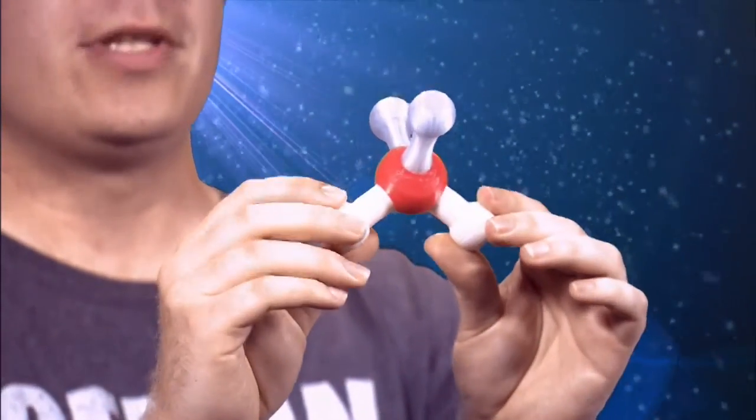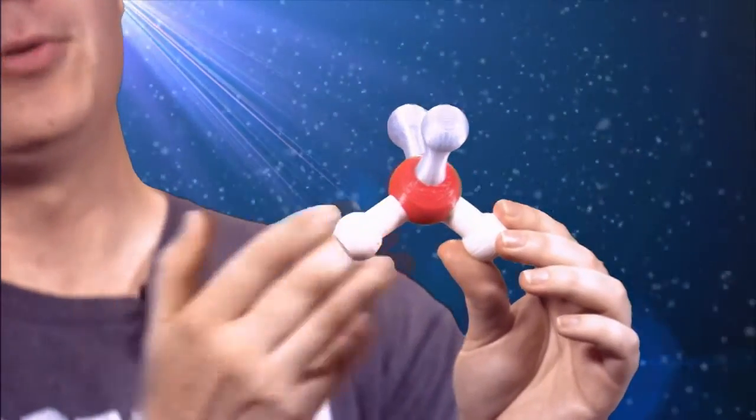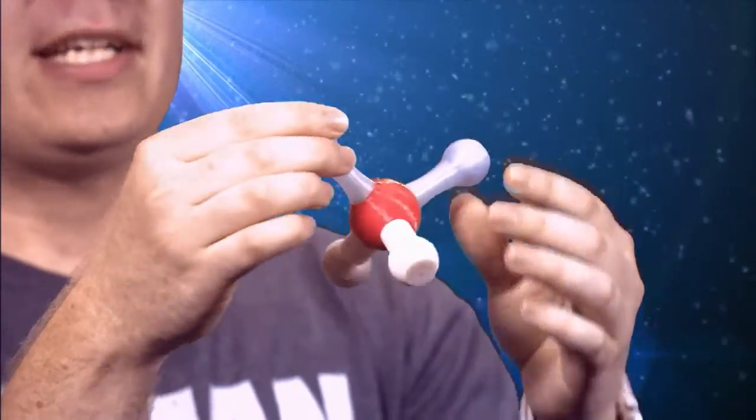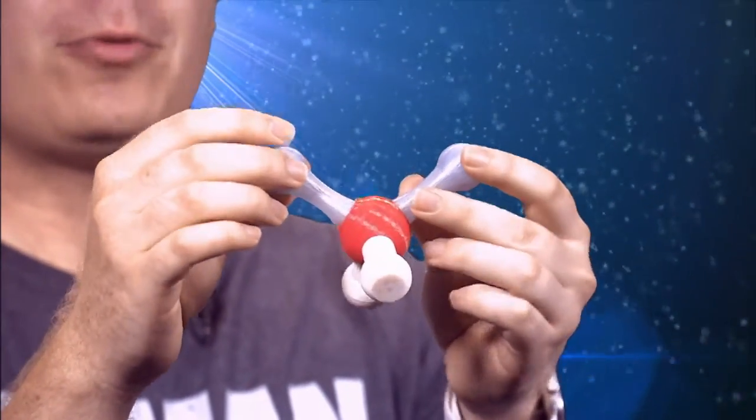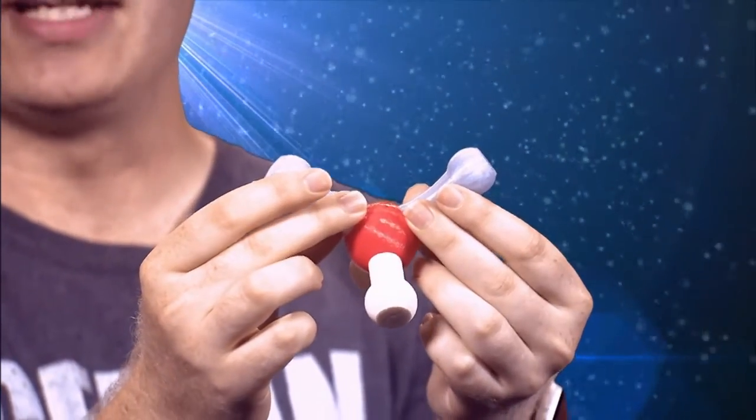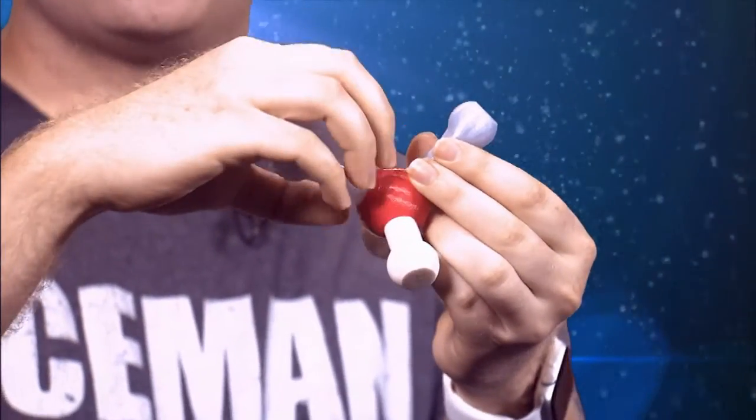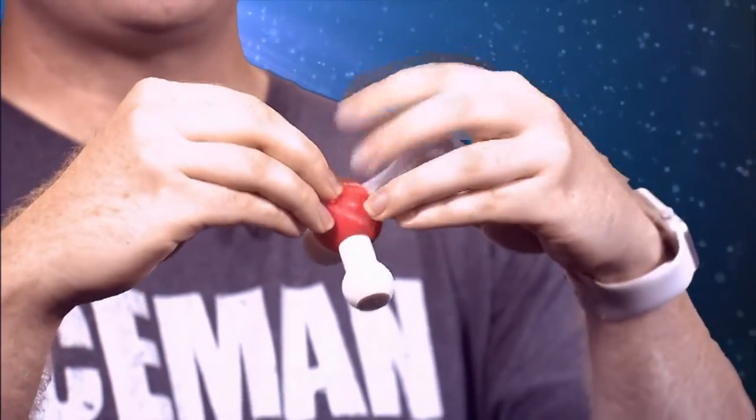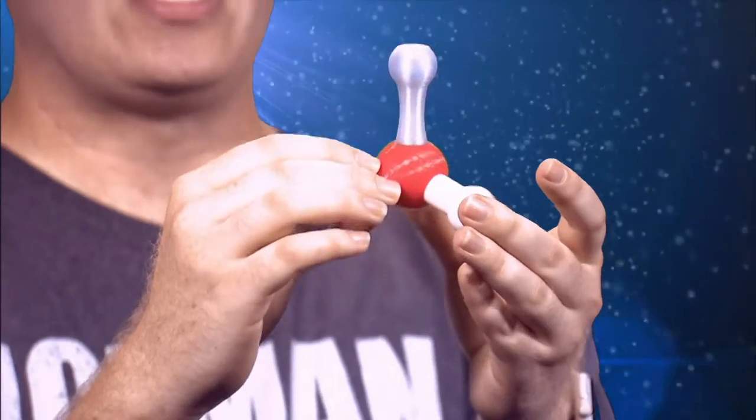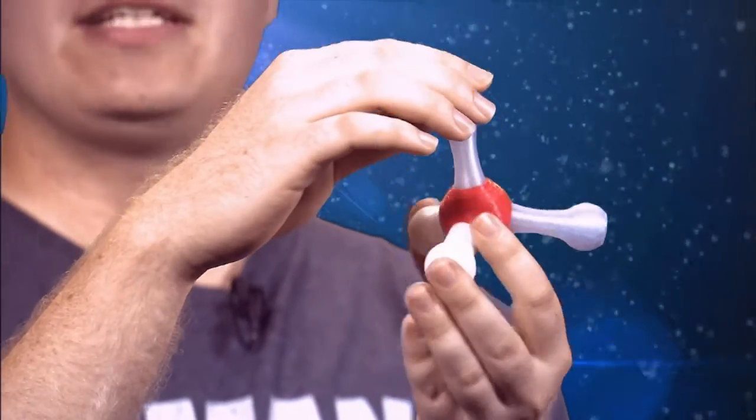Again, with this particular water molecule, we have two hydrogens and an oxygen in the middle. What we see right here are these long extended parts. These are the representation of the electron lone pairs. Electrons try to group together and take up space around the oxygen atom. They try to take up space in an even fashion.